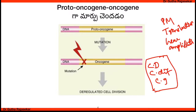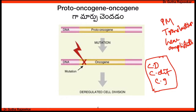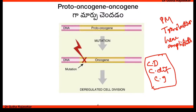A point mutation alters the gene sequence. Chromosomal translocation involves a segment of DNA moving between chromosomes. Gene amplification results in multiple copies of a gene.